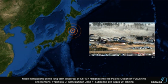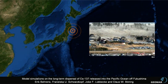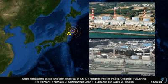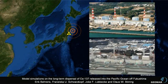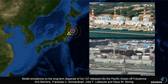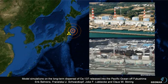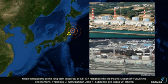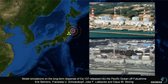Our study deals with one of the consequences of a disastrous earthquake and subsequent tsunami that hit Japan in March 2011. Caused by the explosions and meltdowns in the Fukushima Daiichi nuclear power plants, large amounts of radioactive material, including long-living isotopes such as cesium-137, were released into the environment. Contaminated waters entered the Pacific Ocean by atmospheric deposition and direct discharge of coolant in the weeks after the catastrophe.